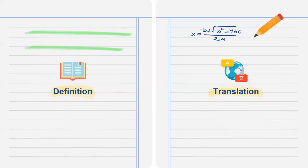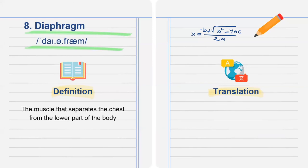The eighth word we have is diaphragm. The muscle that separates the chest from the lower part of the body. Translation: cơ hoành.